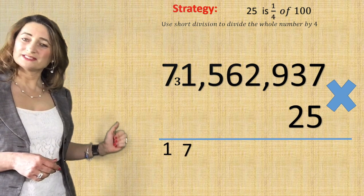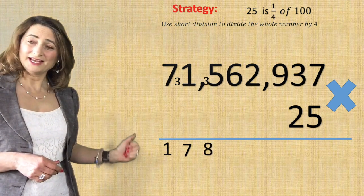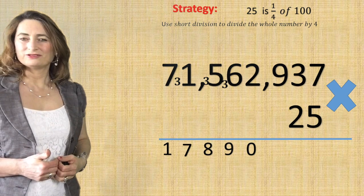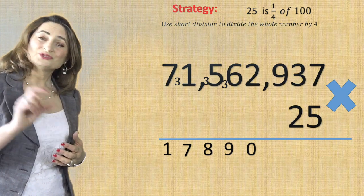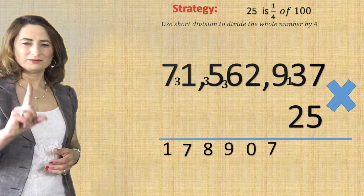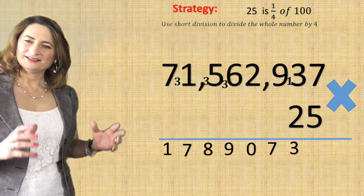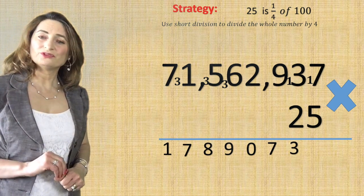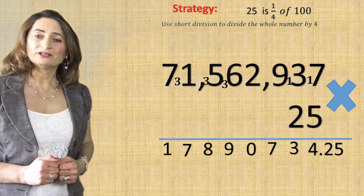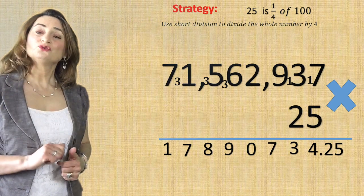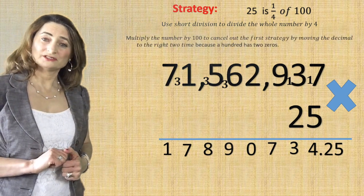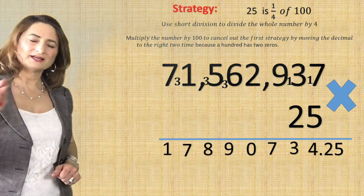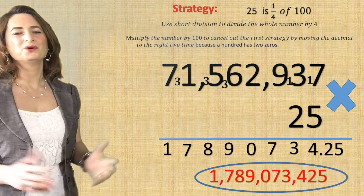31 divided by 4 is 7 with a remainder of 3. 35 divided by 4 is 8 with a remainder of 3. 36 divided by 4 is 9. Now 2 divided by 4 is zero — I can't do that — so take the two numbers together: 29 divided by 4 is 7 with a remainder of 1. 13 divided by 4 is 3 with a remainder of 1. 17 divided by 4 is 4 with a remainder of 1. Now since you divided by a hundred in the first step, multiply by a hundred by moving the decimal to the right twice, because a hundred has two zeros. You end up with this big number without using a calculator.